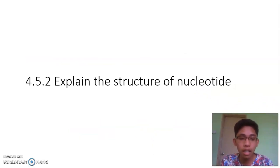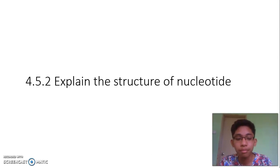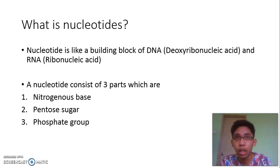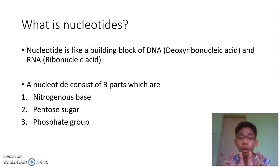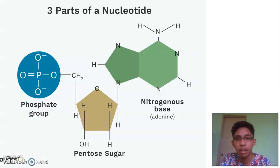Next, explain the structure of nucleotide. Nucleotide is the building block for our DNA and also RNA. DNA stands for deoxyribonucleic acid and RNA stands for ribonucleic acid. One nucleotide consists of three parts: nitrogenous base, pentose sugar, and phosphate group. You need to remember these three parts.